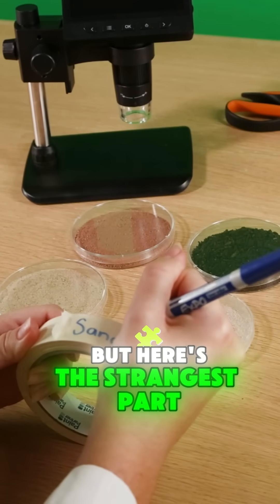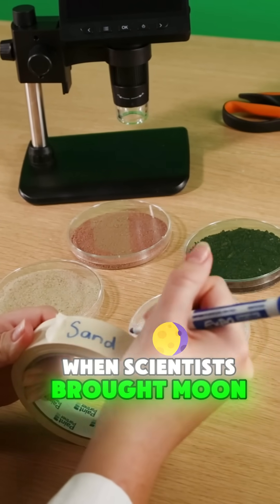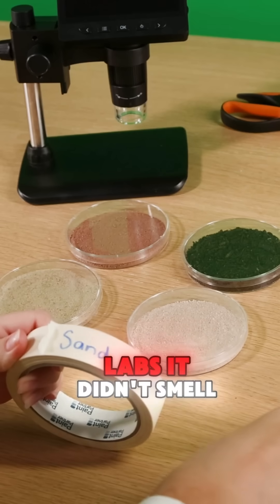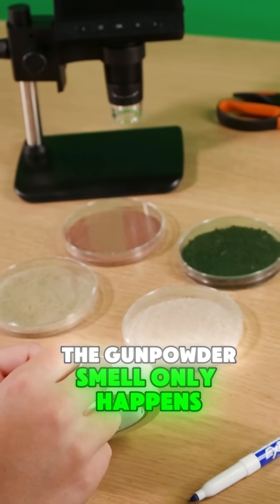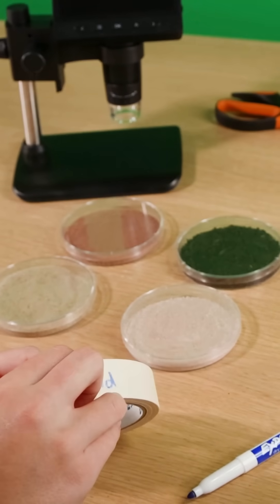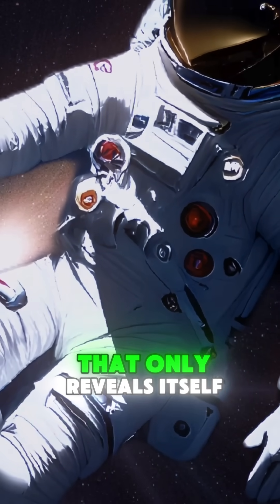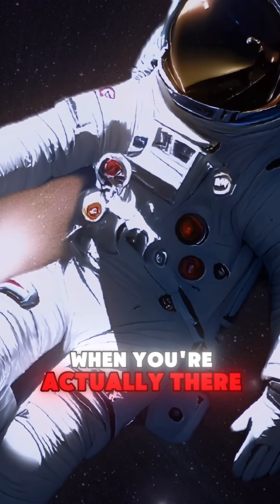But here's the strangest part. When scientists brought moon dust back to Earth and tested it in labs, it didn't smell like anything. The gunpowder smell only happens in space. It's like the moon has a secret smell that only reveals itself when you're actually there.